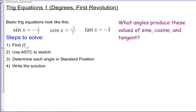Basically what they ask is what angles produce these values of sine, cosine, and tangent. So what angle could I put here that's going to give me a sine of negative one-half?